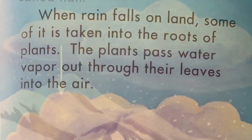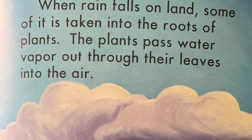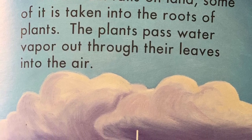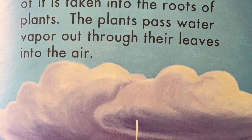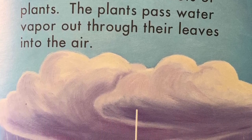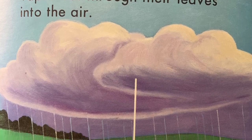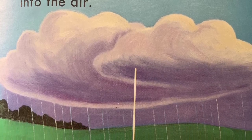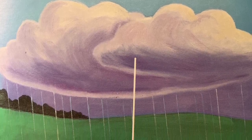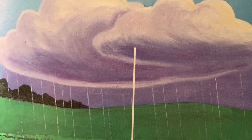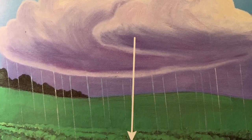When rain falls on land, some of it is taken into the roots of plants. The plants pass water vapor out through their leaves into the air.